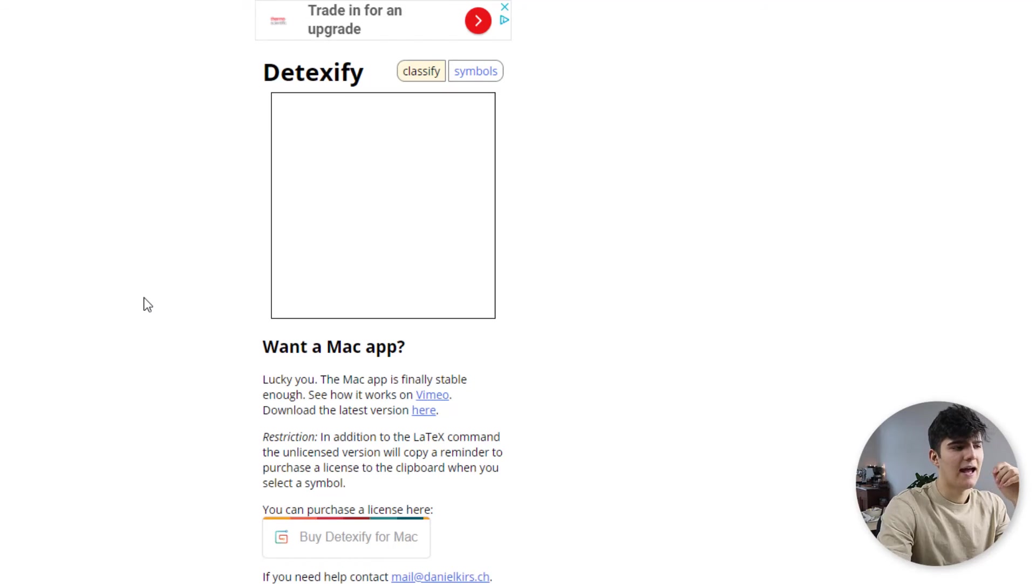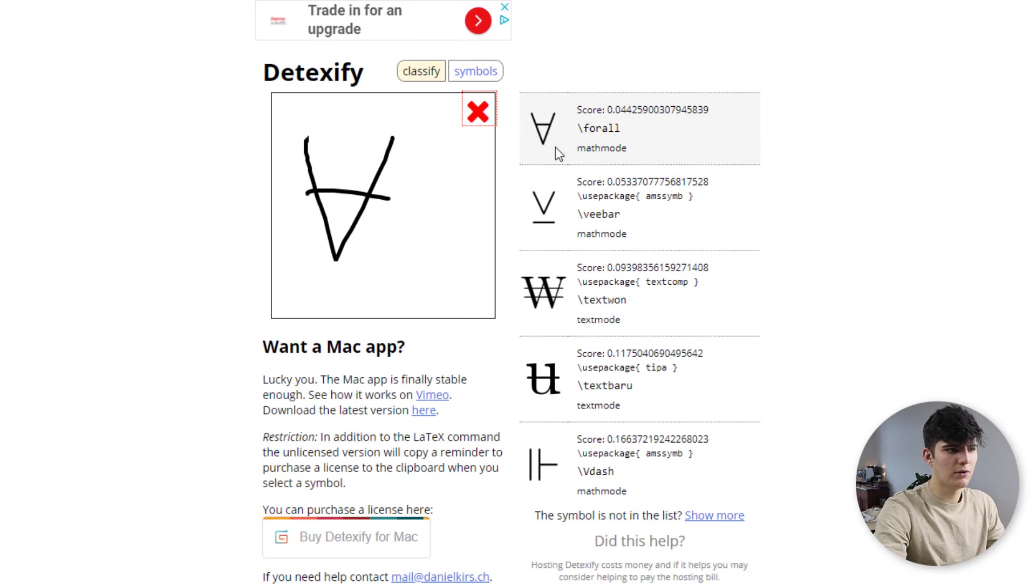And lastly, one more resource I want to cover is actually called Detexify. And that's actually one of the most helpful resources I've come across so far. Pretty much what it does is it allows you to draw the symbol that you're looking for. And then it will give you the shortcut for the symbol. It's pretty helpful and it actually works quite well. So I'll just try using the for all symbol, this one here, which is used for logic. And it works pretty well. You usually find all the symbols you're looking for. And then you can just use this little shortcut to actually implement the symbol in Notion.